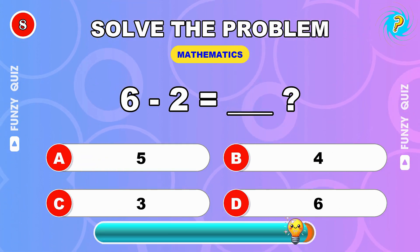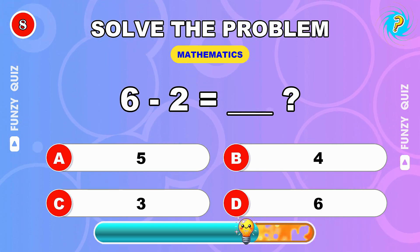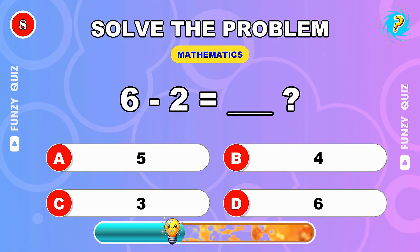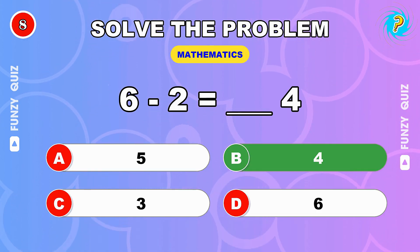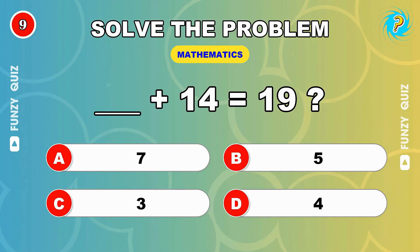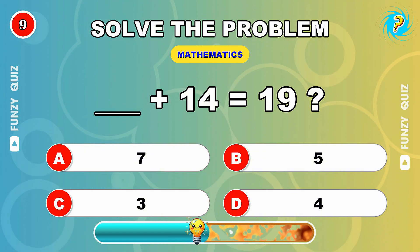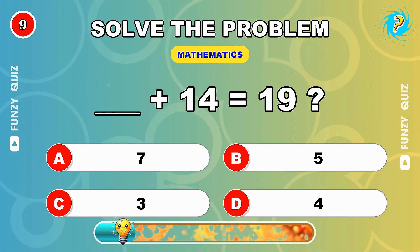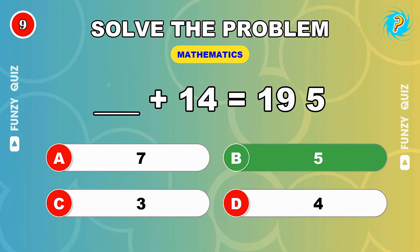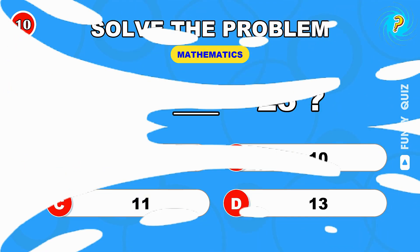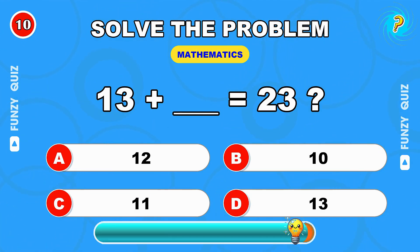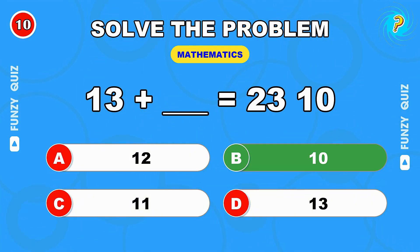Let's try this: 6 minus 2. The answer is 4, good job. What number plus 14 gives you 19? It's 5. 13 plus what number equals 23? 10, awesome.